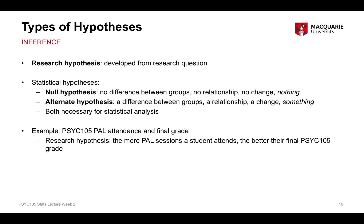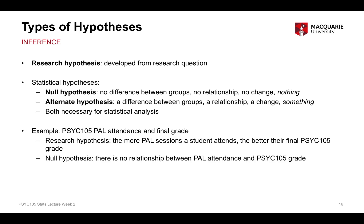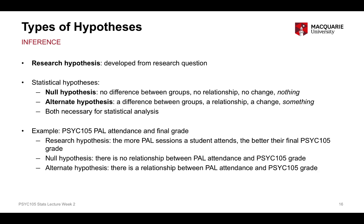To give you an example: with PAL attendance and final 105 grade, the research hypothesis is that the more PAL sessions a student attends, the better their final 105 grade will be. The null hypothesis says there is no relationship between PAL attendance and 105 grades — no effect. The alternate hypothesis says there is a relationship between PAL attendance and 105 grade — something other than no relationship, though it doesn't necessarily specify what that relationship is.